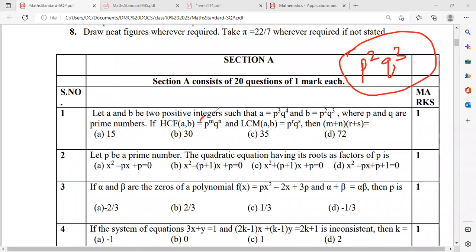They are saying the HCF is p to power m, q to power n. If we compare these two numbers, you get p to power m, that means m should be 2. And the power of q, that is n, n should be 3.